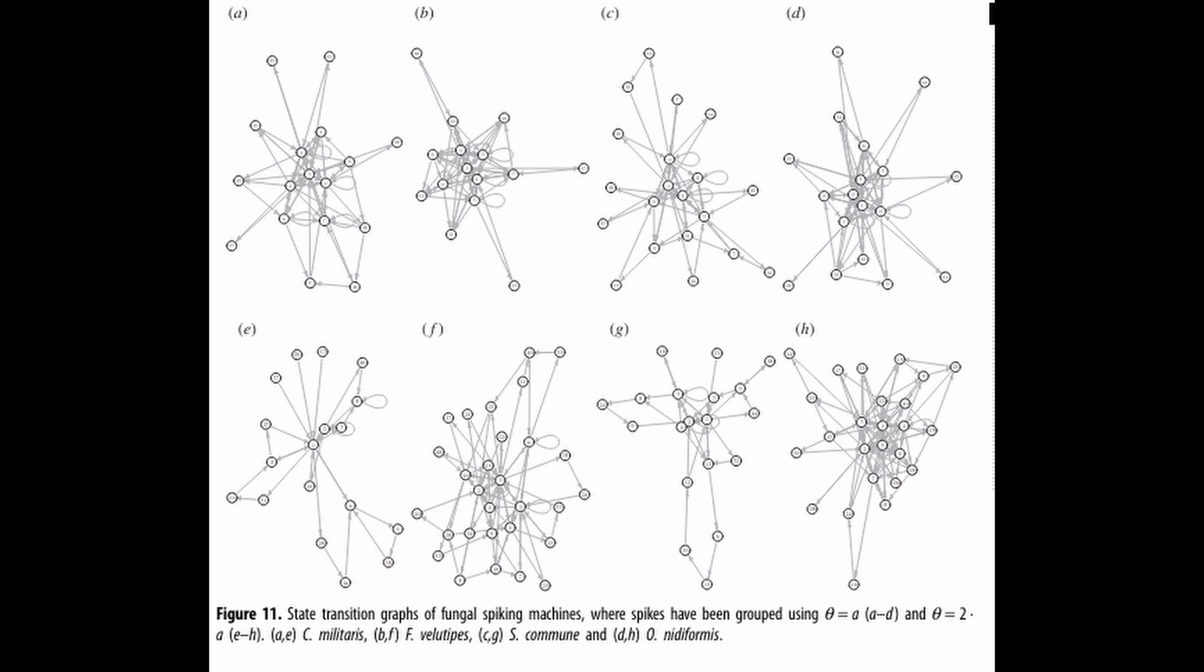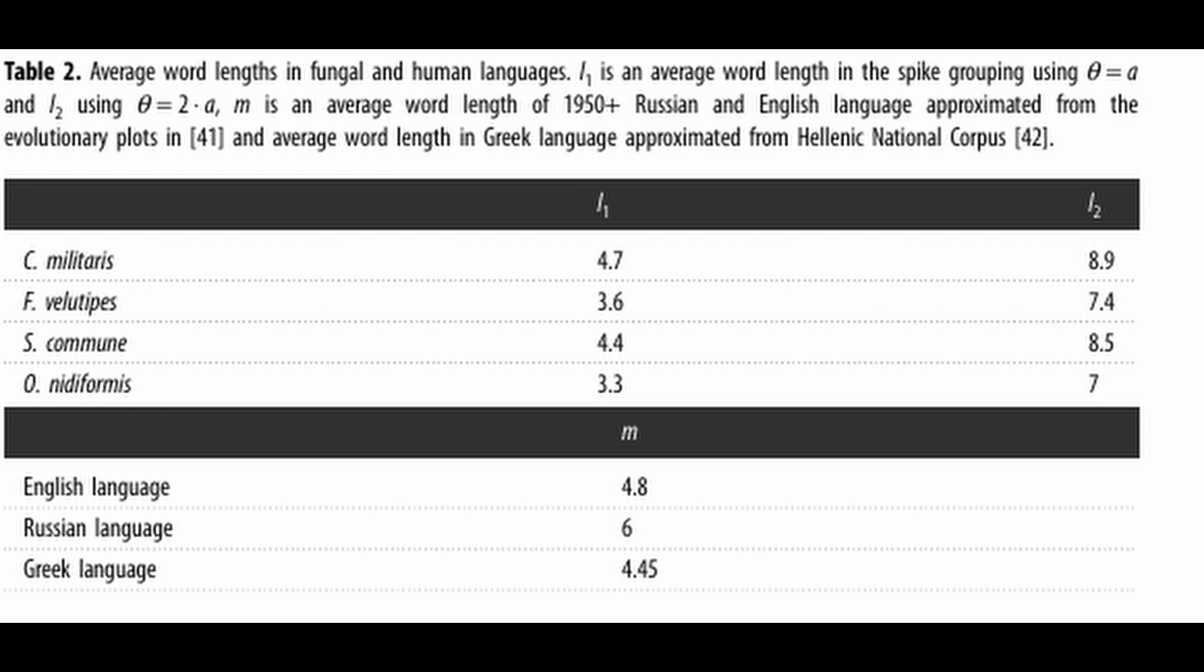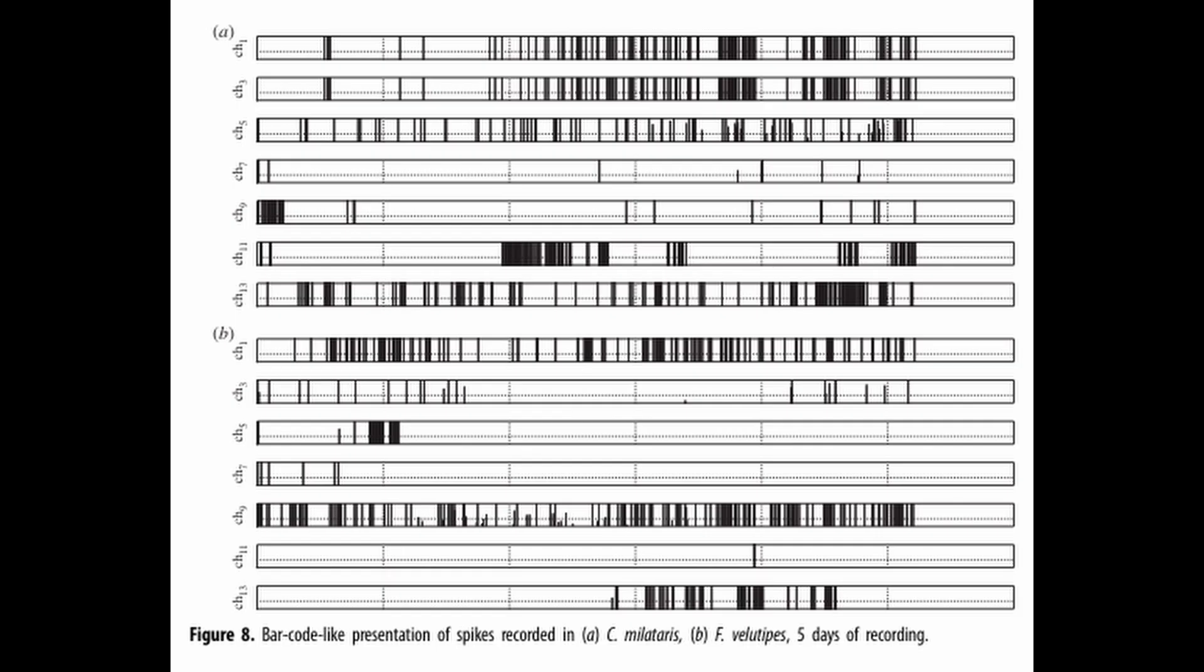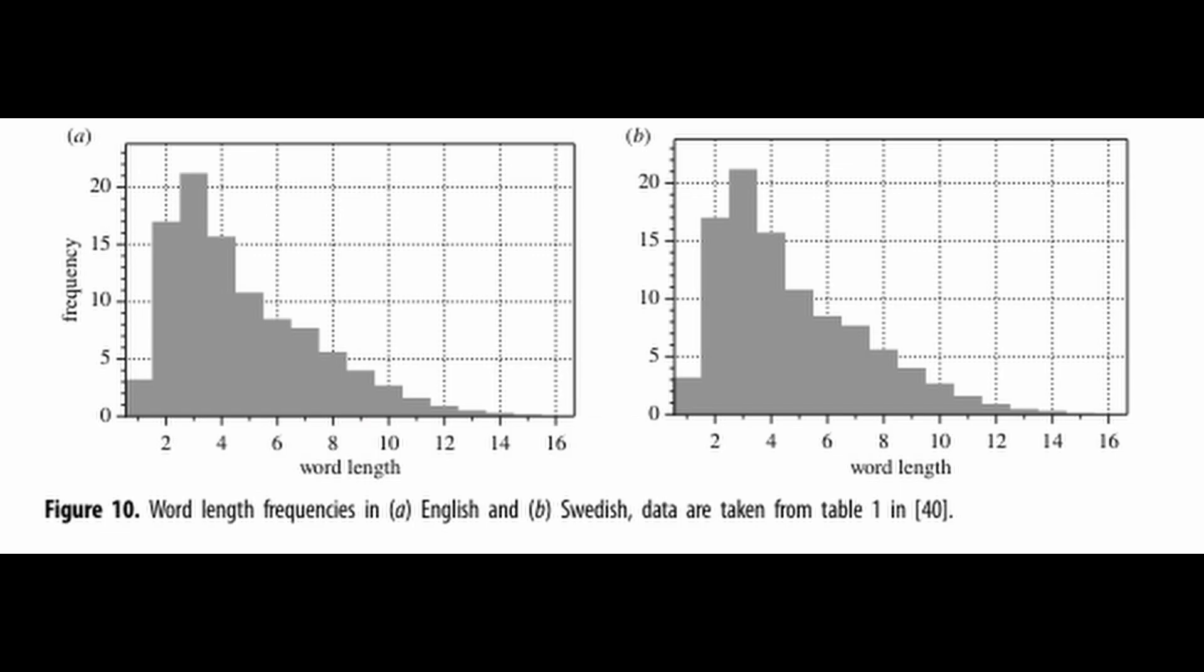But anyways, the conclusion. The study of the language of fungi represents a groundbreaking step in our understanding of communication in the natural world. By revealing that fungi might communicate through electrical spiking activity, we gain a deeper appreciation of the complexity and sophistication that these often overlooked organisms have. As research continues, we may uncover even more about how fungi interact with their environment and other living beings, potentially leading to revolutionary applications in science and technology.